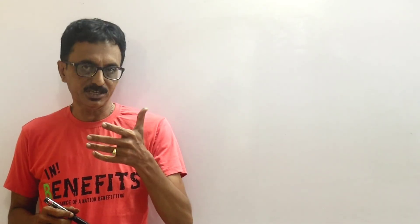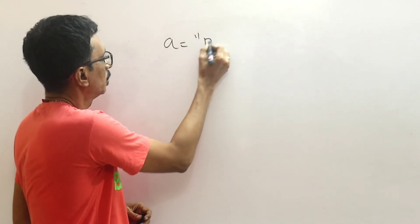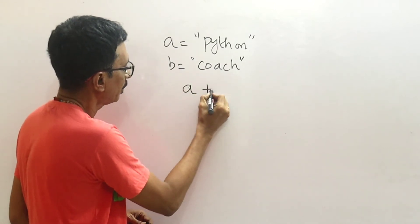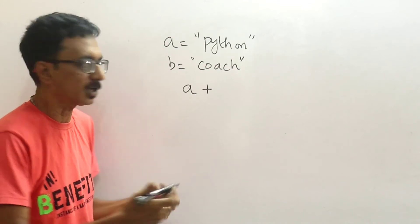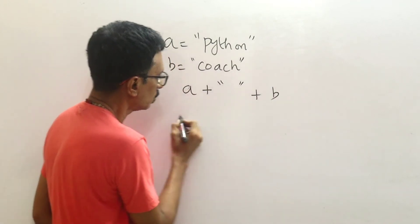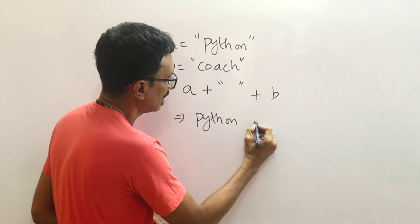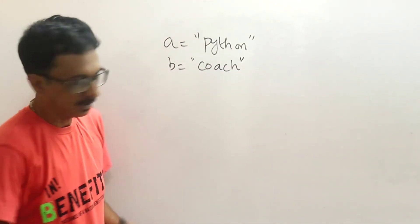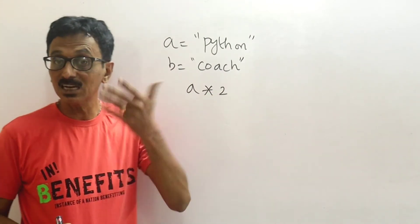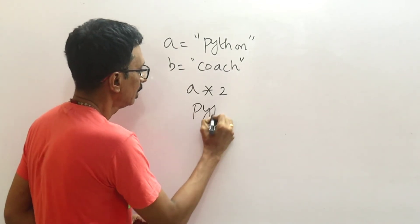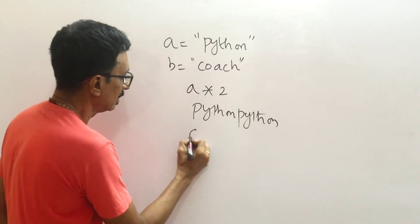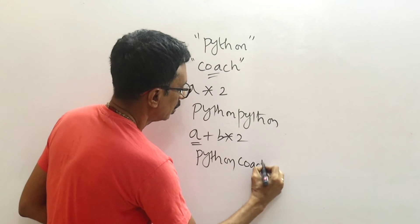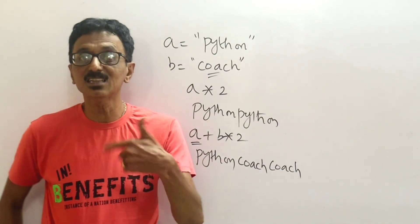Operations — for example, a is equal to 'Python', b is equal to 'coach'. a plus b is concatenation — 'Python coach'. You can also use repetition: string multiplied by 2. These are string operations in Python.